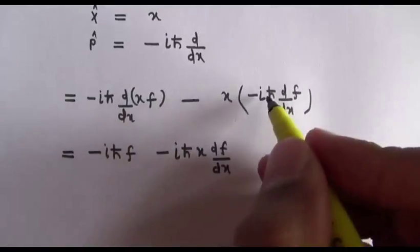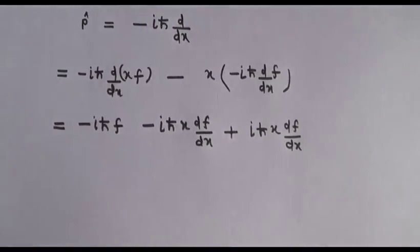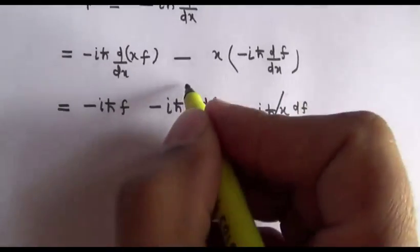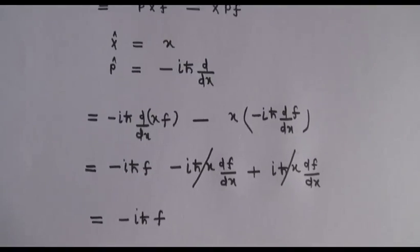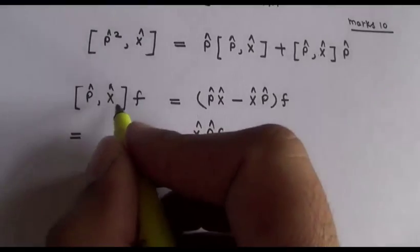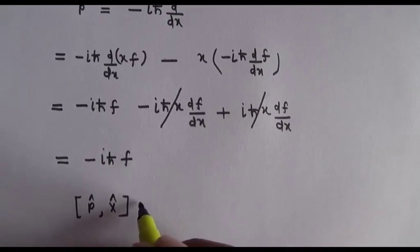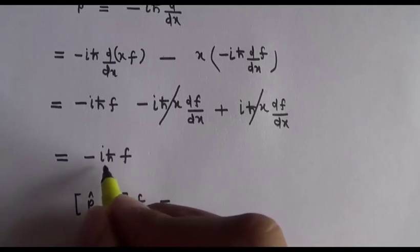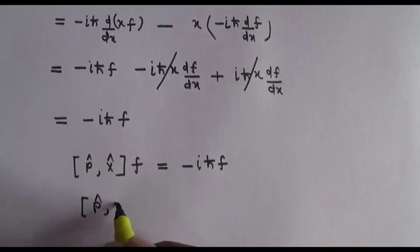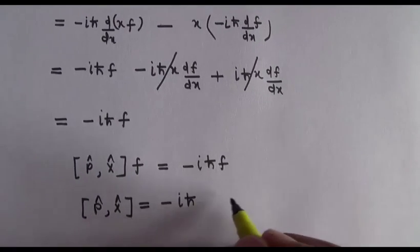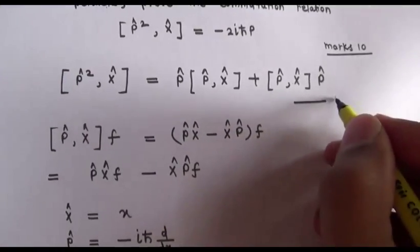The +iℏ x·df/dx terms cancel, leaving minus minus plus, so we get -iℏ·f. That means we can write [p̂, x̂] operated on f equals -iℏ·f, so [p̂, x̂] = -iℏ. This is equation one.